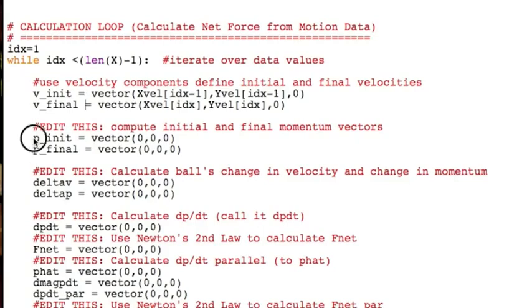Now we need to go through all the steps to obtain delta p over delta t. First, determine the corresponding momentum. Then compute the change in velocity and the change in momentum. Then estimate dp dt from delta p over delta t. And finally, apply Newton's second law to obtain F net. Pause the video and see if you can write out the code for all of these steps.